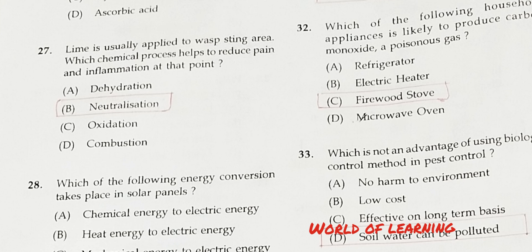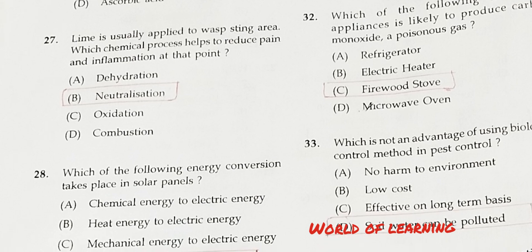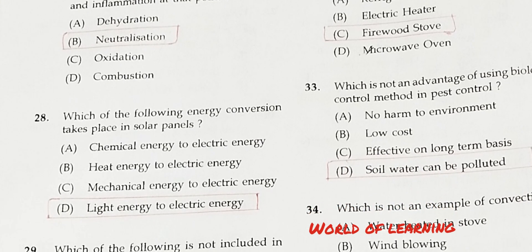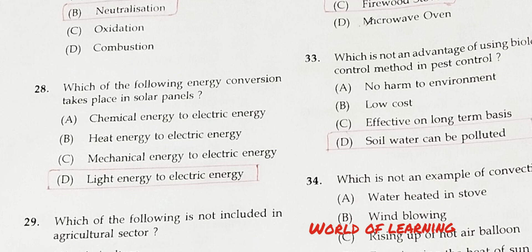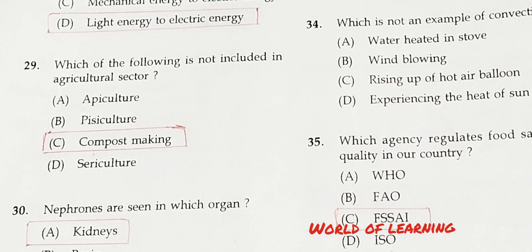Question 27: Which of the following energy conversions takes place in solar panels? Option A: Chemical energy to electric energy. Option B: Heat energy to electric energy. Option C: Mechanical energy to electric energy. Option D: Light energy to electric energy. Correct answer is Option D, light energy to electric energy.